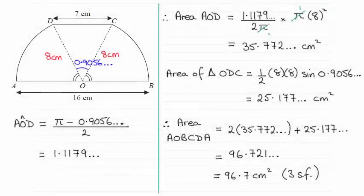Hi there. Now for this question, we had to work out the area of the scraper and give it to three significant figures. And as you can see, it turns out to be 96.7 cm² to three significant figures.